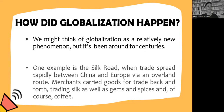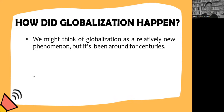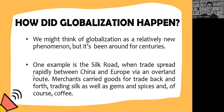How did globalization happen? We might think of globalization as a relatively new phenomenon, but it has been around for centuries. One example is the Silk Road, when trade spread rapidly between China and Europe via an overland route. Merchants carried goods for trade back and forth, trading silk, jams, spices, and of course coffee. The main reason that caused globalization is the improvement of transportation and making global travel easier.